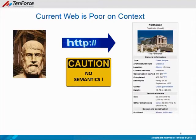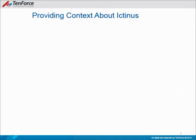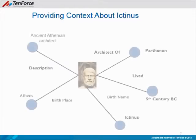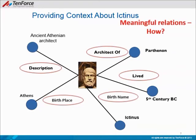This means a computer cannot understand that Ictinus is the architect of Parthenon. So the question is, how can we build semantic relations so that computers can understand? Let's look at this representation of knowledge about Ictinus. Relations like 'architect of,' 'lived in,' and 'description' are exactly the ones we want to have. The question is, is there a way to achieve such a representation?